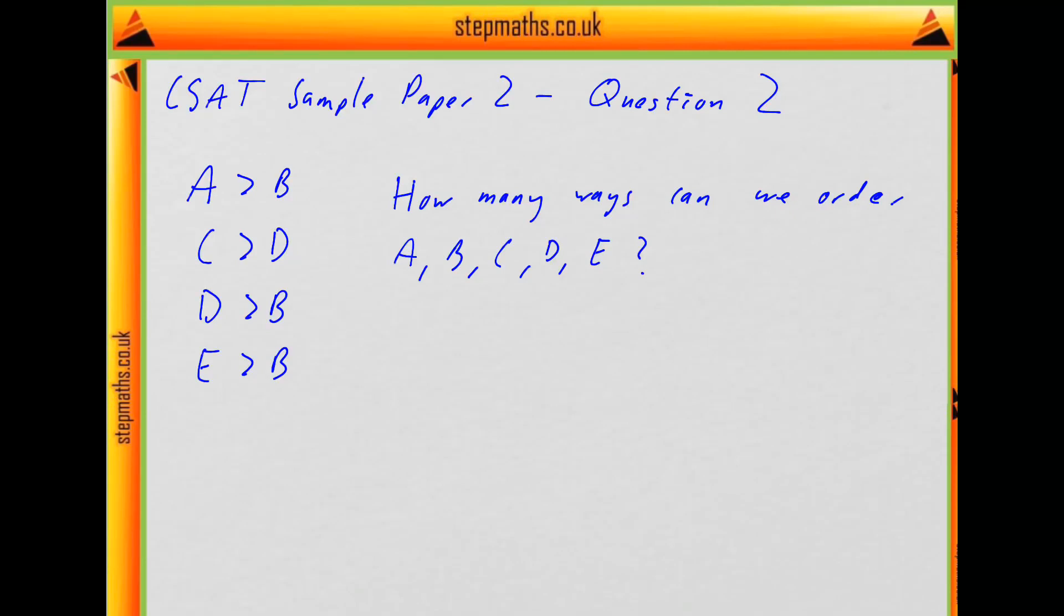This is question 2 from the second CSAT sample paper. In this question we're given a full piece of information. A is greater than B, C is greater than D, D is greater than B, and E is greater than B.